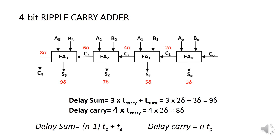As a general expression, the delay of the sum = (n − 1) × t_carry + t_sum, and the delay of the carry = n × t_carry, where n is the number of bits.